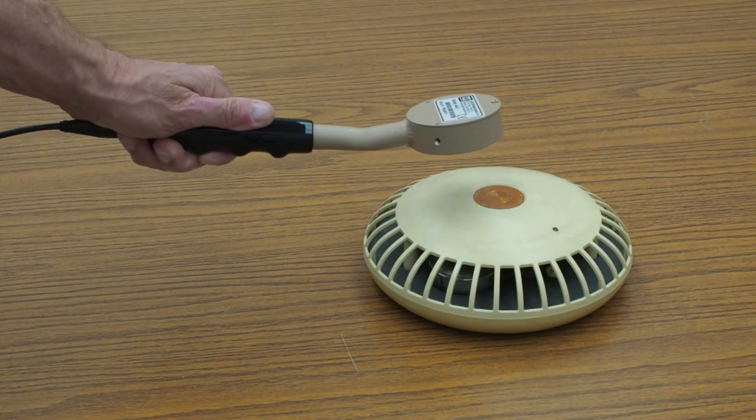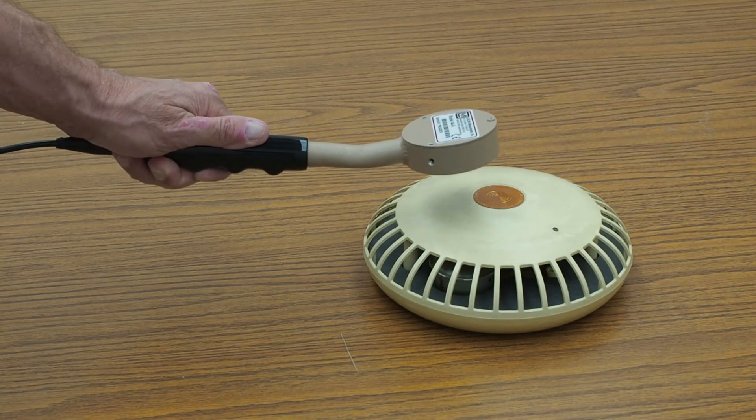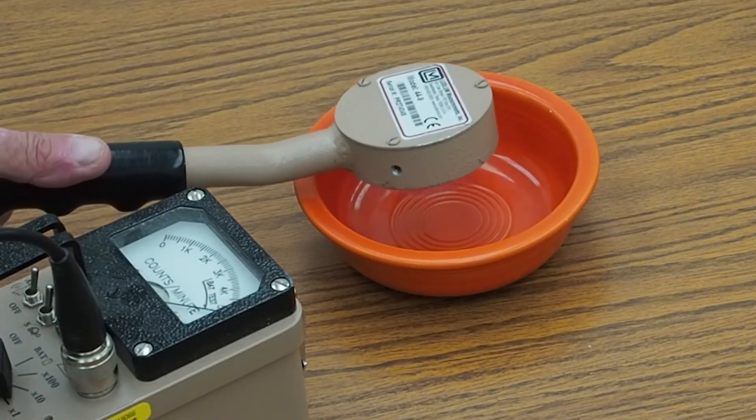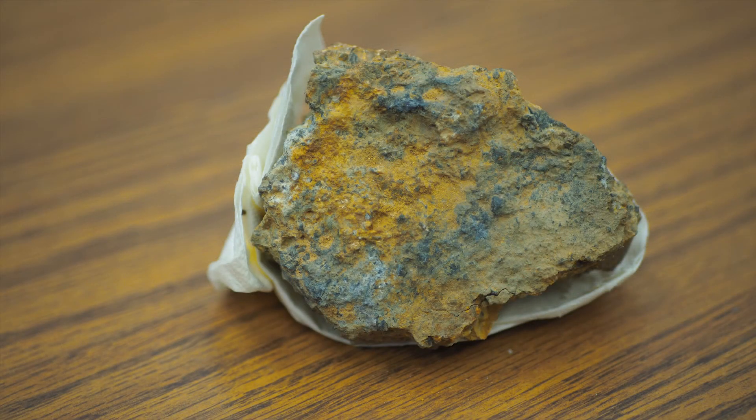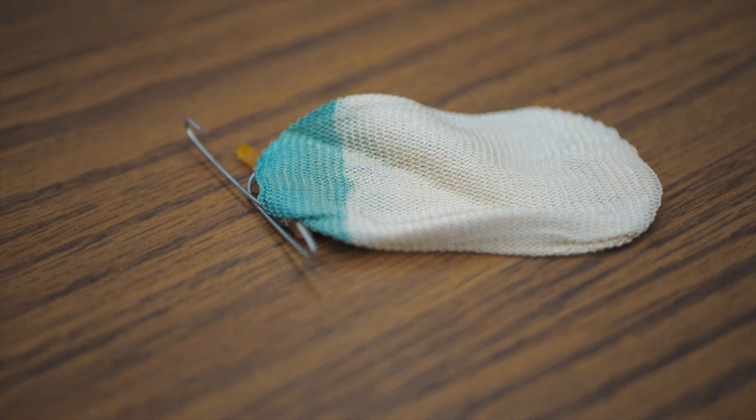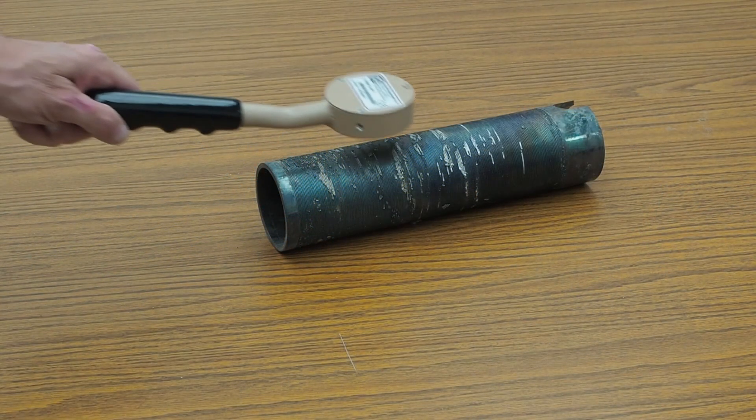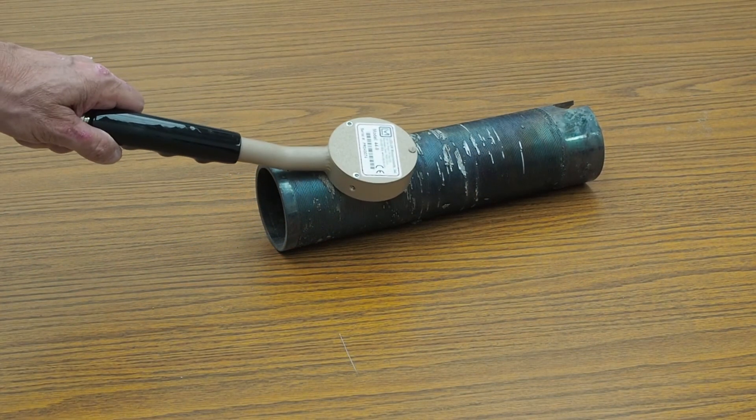Some materials are naturally radioactive such as smoke detectors, some antique types of porcelain, certain minerals dug from the ground, and old lantern mantles. Over time, NORM can build up in pipes and valves.